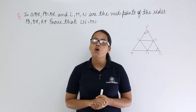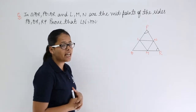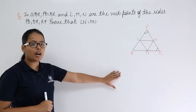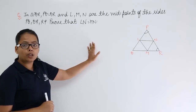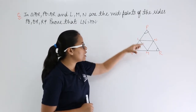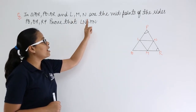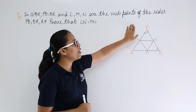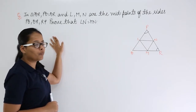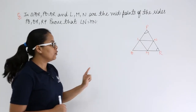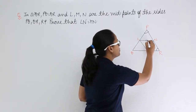Let's discuss this problem from congruence of triangles. In triangle PQR, side PQ is equal to QR. L, M, N are the midpoints of the sides PQ, QR, and RP. What you need to prove here is that side LN is equal to MN.